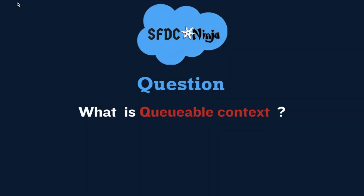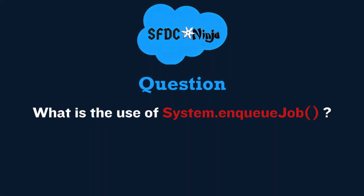Next question: what is Queueable context? It is an interface provided by Salesforce which is basically used to create a Queueable class. It contains the job ID, which can be used to monitor a Queueable job. Next question: what is the use of system.enqueueJob? We use this method to add a Queueable job to the asynchronous execution queue.